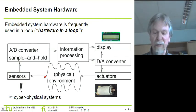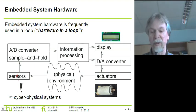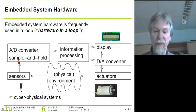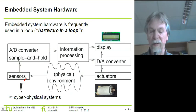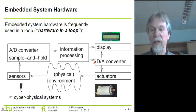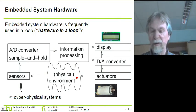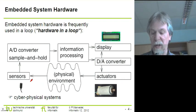The components will be discussed according to their order in the so-called hardware-in-the-loop. In this hardware-in-the-loop we start with the physical environment — that's why we also talk about cyber-physical systems. The first component in this loop is the set of sensors, followed by the sample-and-hold circuit. We also have conversion from analog to digital value domains, information processing, possibly a display, and in most cases conversion back from digital to analog values, because many actuators controlling the physical environment use analog values. We will be starting with the sensors.